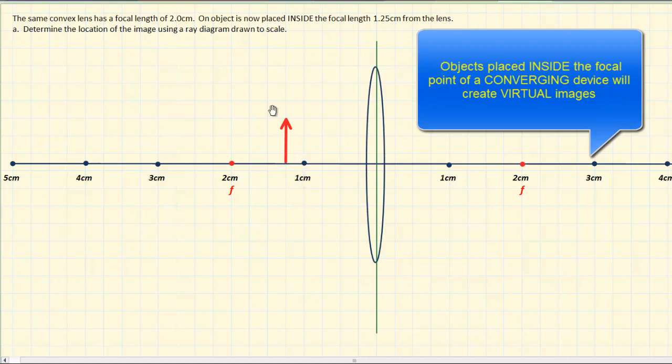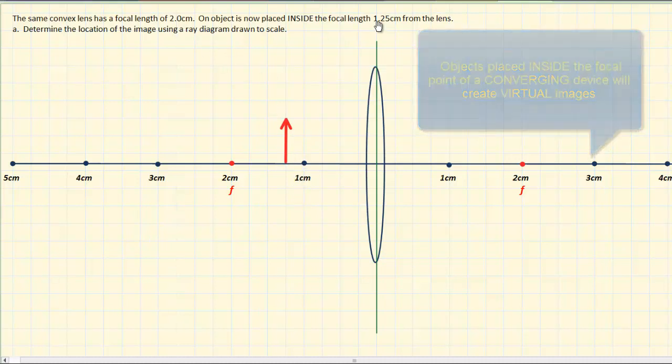Now here, my object is 1.25 centimeters from the lens. So according to my scaling, if the one centimeter mark is four squares, then 1.25 will be an additional square, each square representing 0.25 of a centimeter. So here's my object, and again I've made it an arbitrary height.